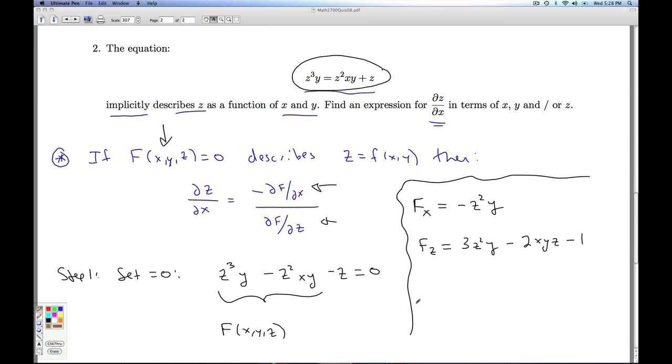So what's my final answer? The partial derivative of z with respect to x equals the opposite of f_x over f_z. So I take the opposite of this. I'm just going to get a positive y z squared over this thing. So 3yz squared minus 2xyz minus 1. And so I've snuck it in here. That's your final answer. That'll do it for number 2. And that'll do it then for quiz 8.